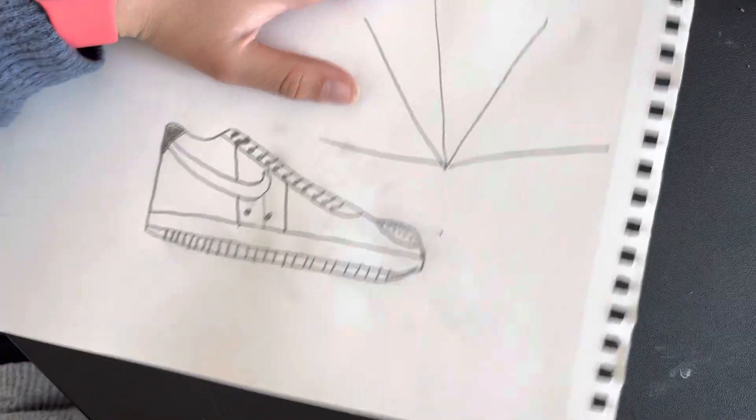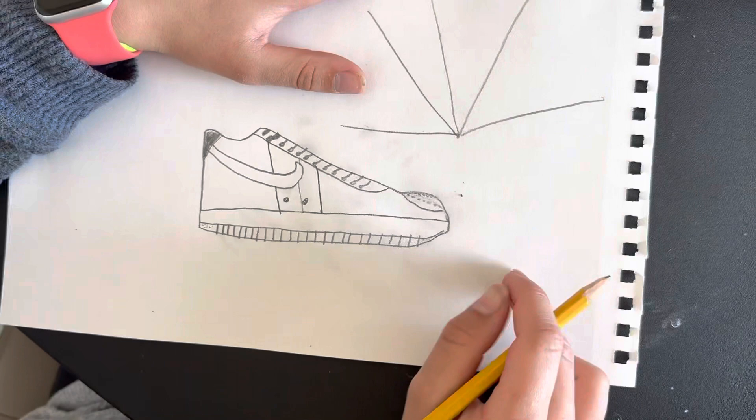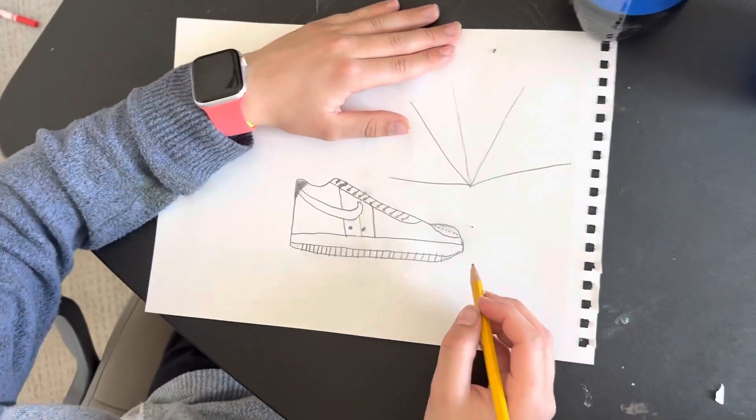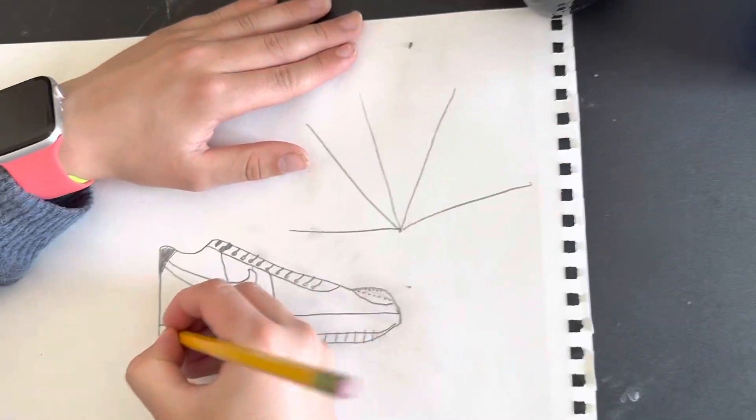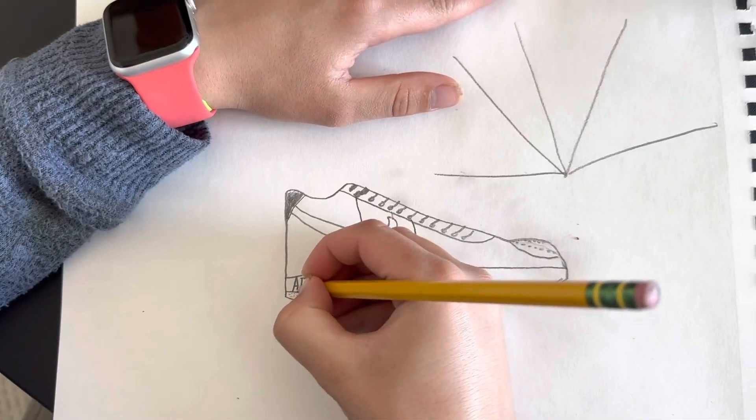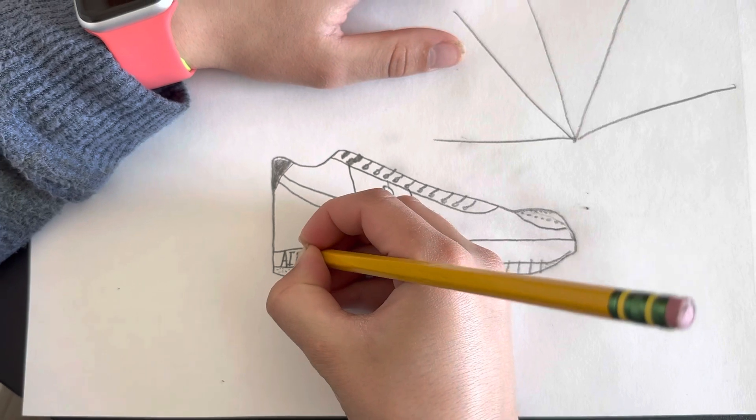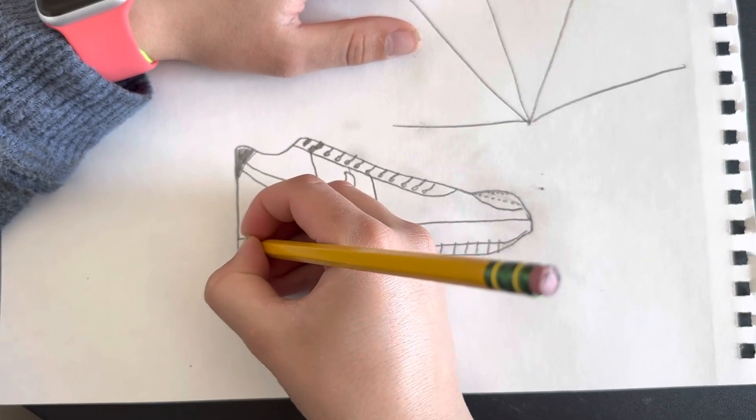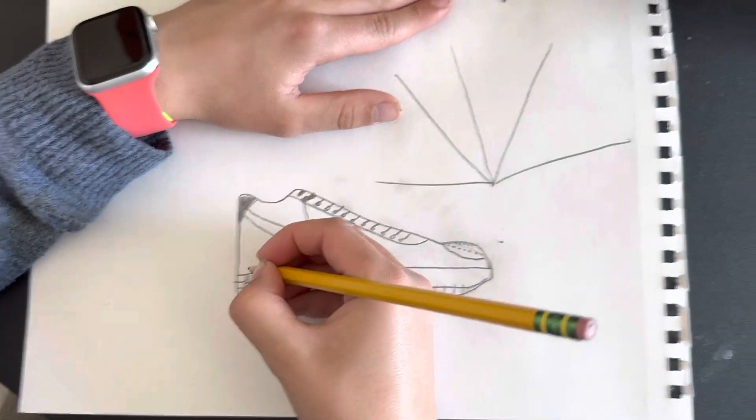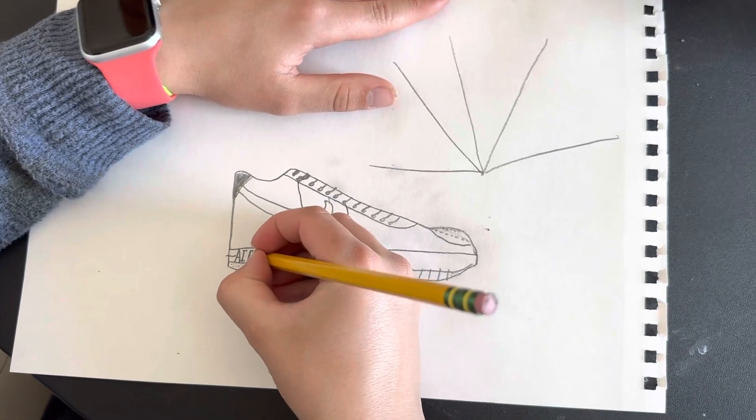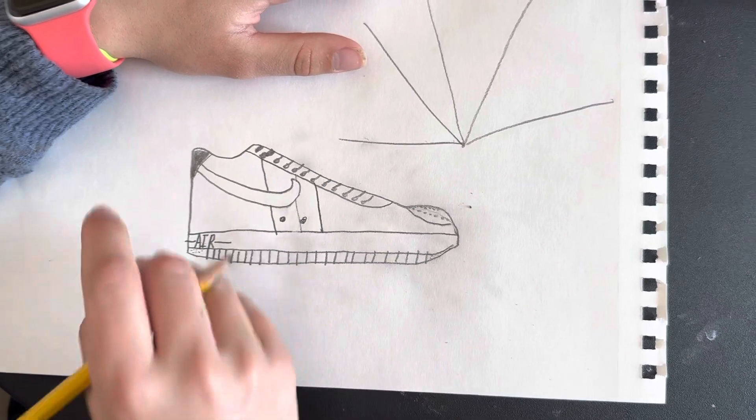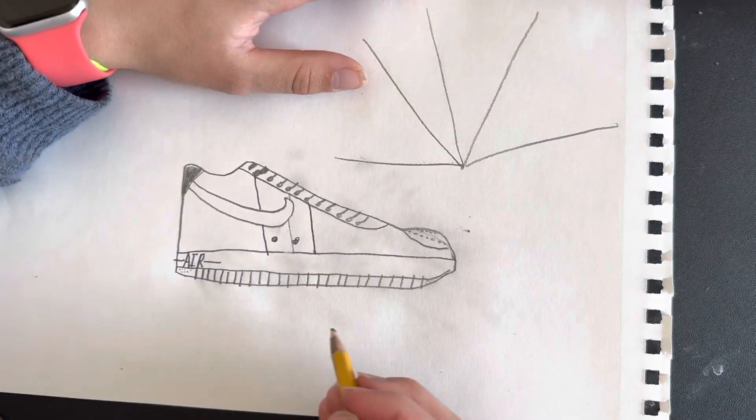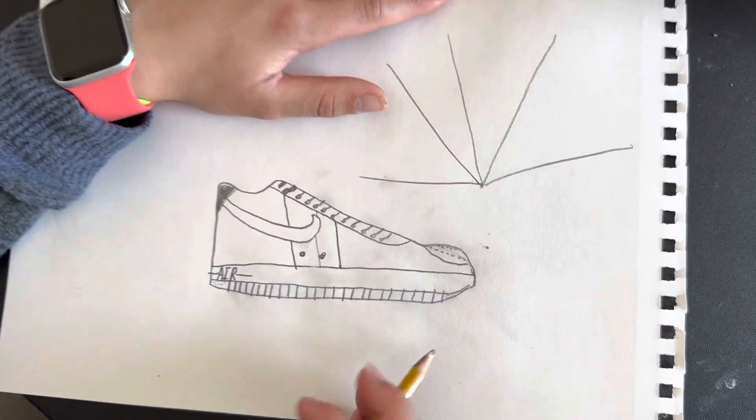And then you can color it however you want. I think I have to draw the 'AIR' right here. Make sure it's all capital letters. You gotta come out a little bit right there, but then the line should be about right there in the R where it curves in. So there's my tutorial on how to draw an Air Force One.